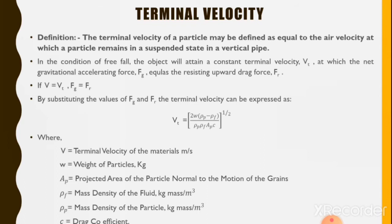Where Vt is the terminal velocity in meters per second; W is the weight of the particle in kg; Ap is the projected area of the particle normal to the direction of motion; ρf is the mass density of the fluid in kg per cubic meter; ρp is the mass density of the particle in kg per cubic meter; and C is the drag coefficient.